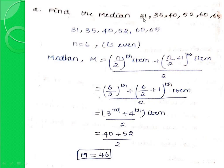Second question: find the median of 31, 35, 40, 52, 60, 65. The number of observations is 6, which is even. Arranging in ascending order: 31, 35, 40, 52, 60, 65. The formula for even n: M equals [(n/2)th item plus (n/2+1)th item] divided by 2, which gives (3rd + 4th item) divided by 2. The 3rd value is 40 and the 4th value is 52. So median equals (40+52)/2 equals 92/2 equals 46. The answer is 46.